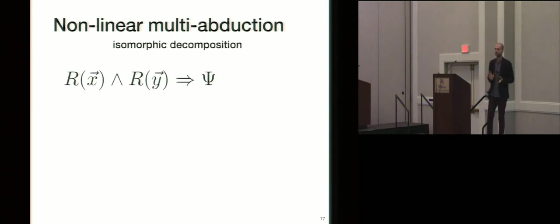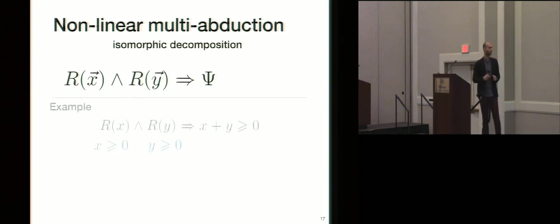So now let's switch attention to the non-linear case. So non-linear multi-abduction is pretty interesting. And the way we solve it is we also do Cartesian decomposition. But then when we have two guys that are the same predicate but over different arguments, we come up with something called isomorphic decomposition, right? Because essentially what we need to do is we need to find the same formula to fill in this predicate with, but it will be over the variables x. And another formula that is equivalent to that modulo-variable renaming. So they're isomorphic, okay? Modulo-variable renaming, right?